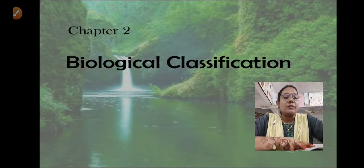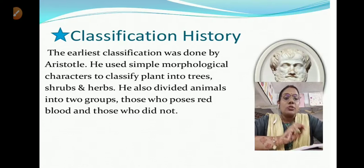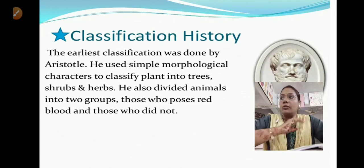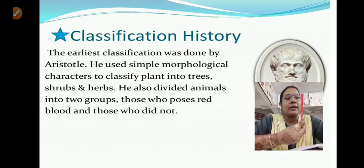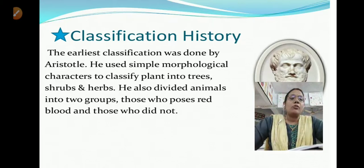The first person to start a classification system was Aristotle, also known as the Father of Biology. Aristotle gave the earliest classification and used simple morphological characters to classify plants. Morphological characters are those we can see with our eyes - external visible features such as color, shape, and structure of an organism.